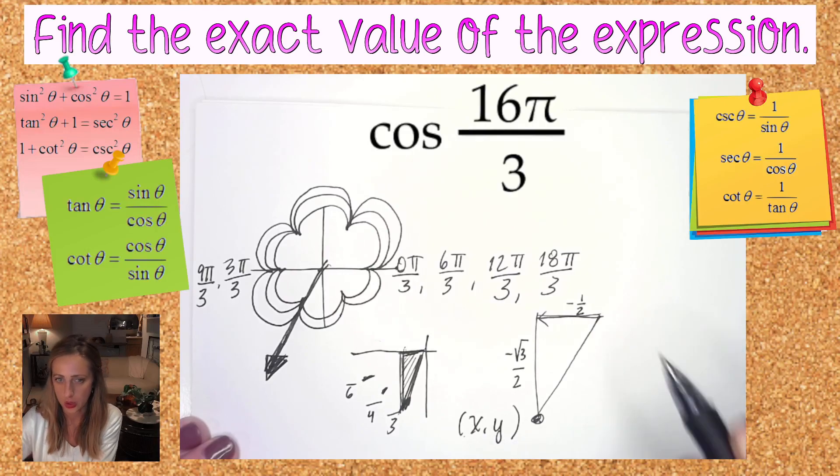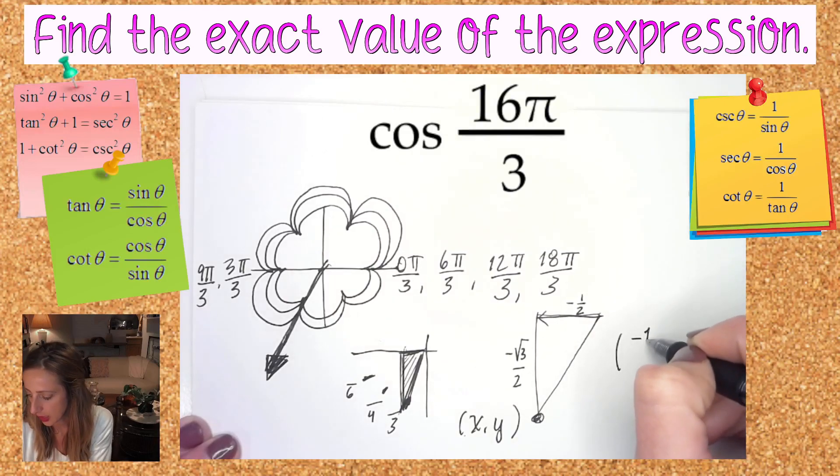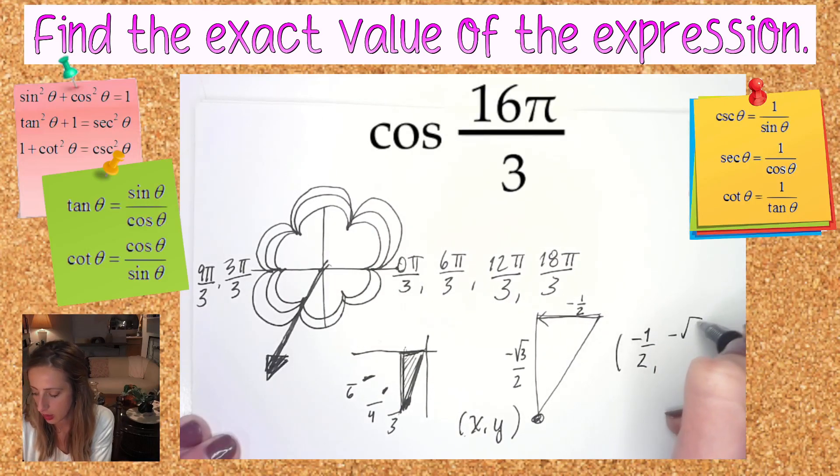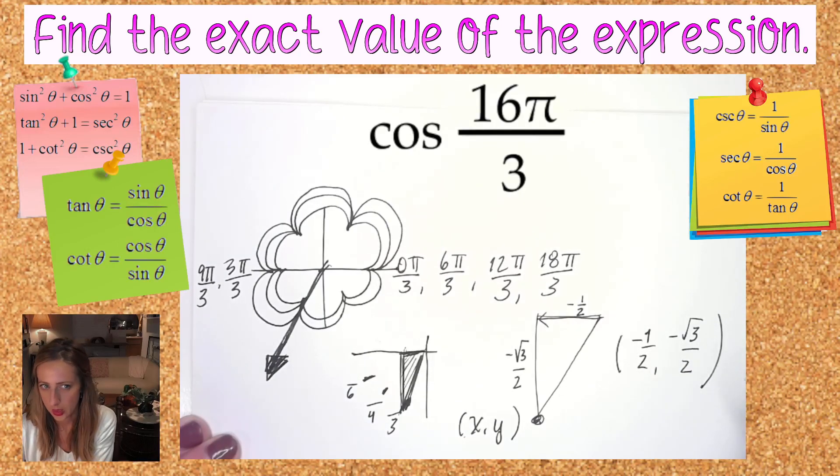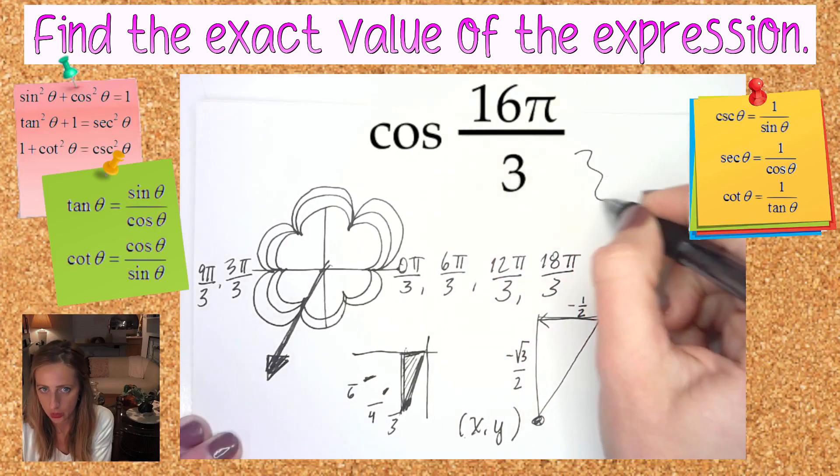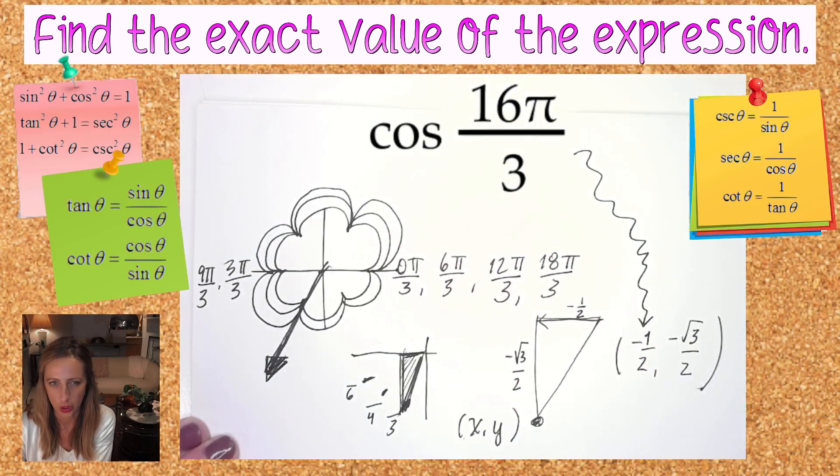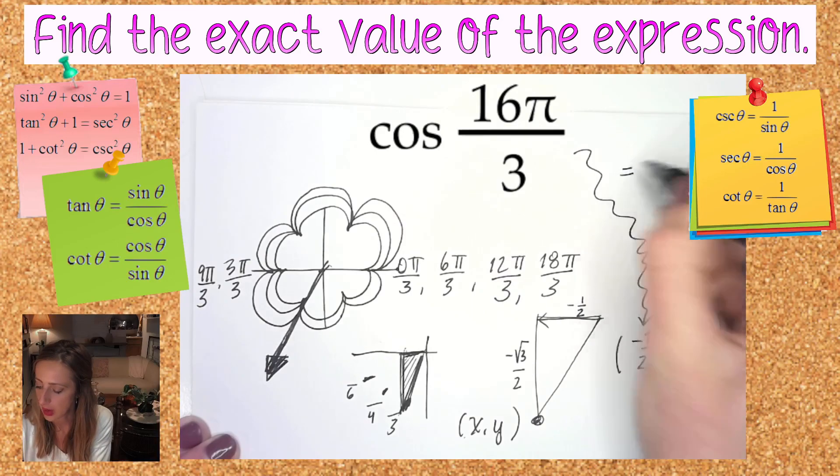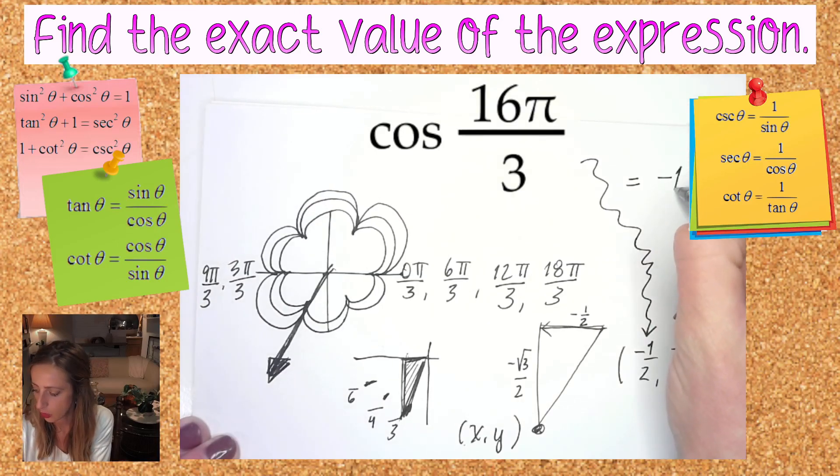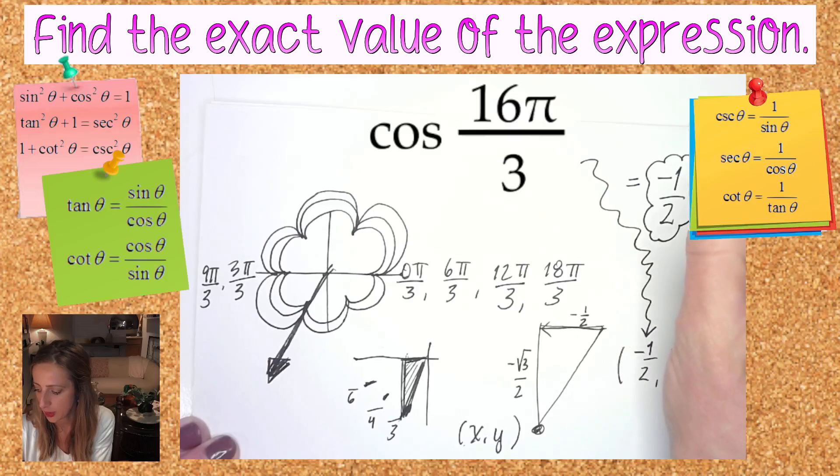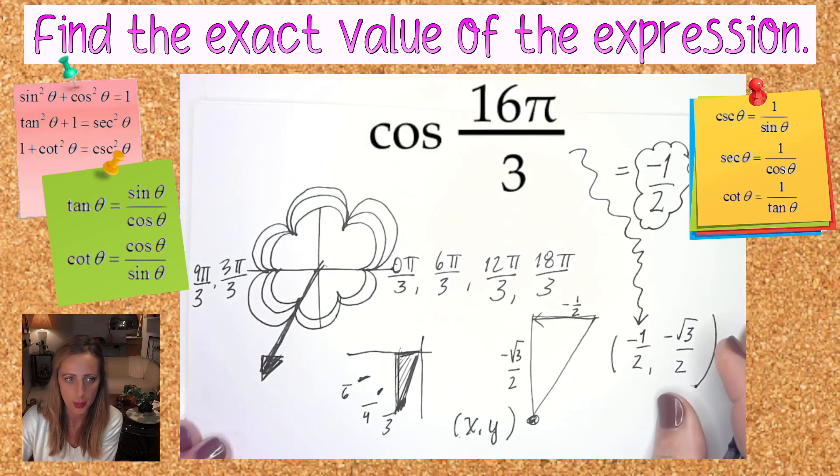So the x and the y coordinate is really negative one half, comma negative root three over two. Well, what else do we need to know? You need to know that the cosine is corresponding to the x coordinate. What does that tell us? Final answer is negative one half.